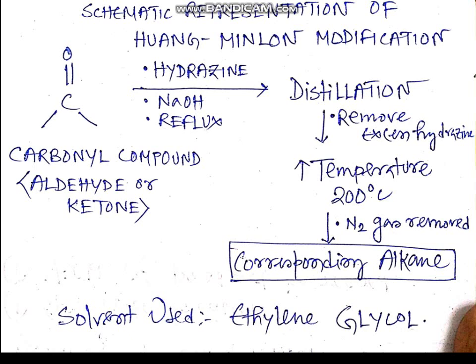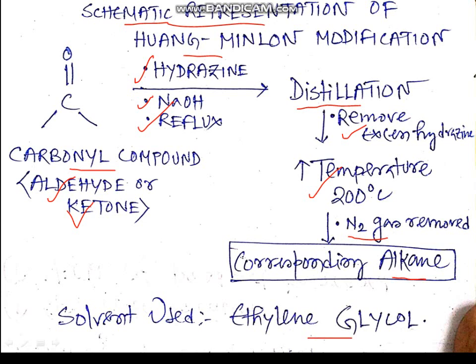Here is the schematic representation for better understanding of the Huang Minlon modification: the carbonyl compound — aldehyde or ketone — in the presence of hydrazine and sodium hydroxide undergoes reflux, then distillation to remove excess hydrazine, then the temperature is increased to 200 degrees centigrade to remove nitrogen gas, and the corresponding alkane is formed. The solvent used is ethylene glycol.